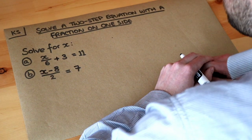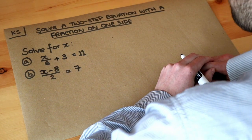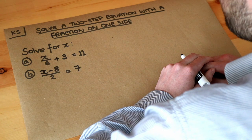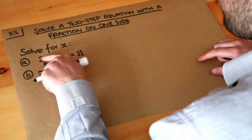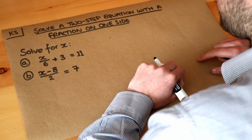Hello and welcome to this Dr Ross Math key skill video on solving a two-step equation with a fraction on one side of the equation. So we want to solve these two equations. We've got x over 6 plus 3 is equal to 11.